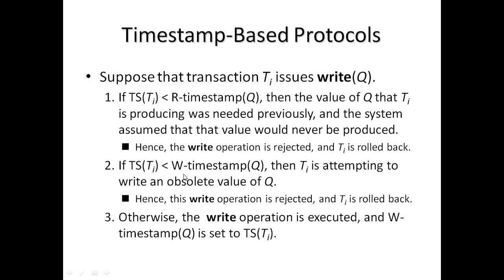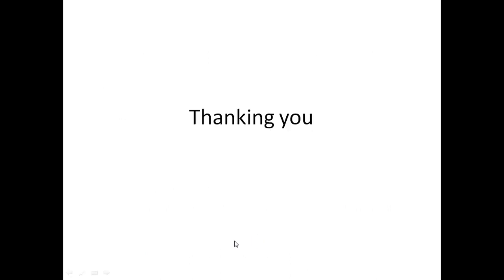If TS(Ti) < W-timestamp(Q), then Ti is attempting to write an obsolete value of Q — since that value is already outdated and no longer required, the write operation is rejected and Ti is rolled back. Otherwise, the write operation is executed and W-timestamp(Q) is set to TS(Ti). Thank you very much; if you like this video, please share and subscribe.